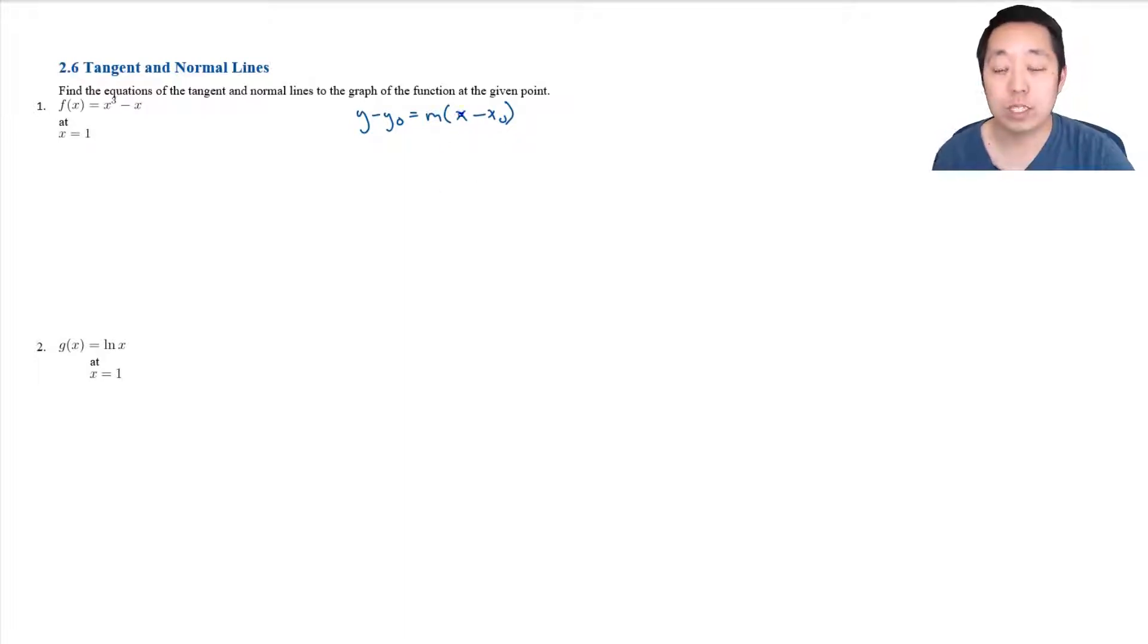In general, what slope point form requires is a slope and a point. The point is the easiest thing to find because in this case they're telling us the point x equals 1, so the equation of the tangent and normal lines to this graph.